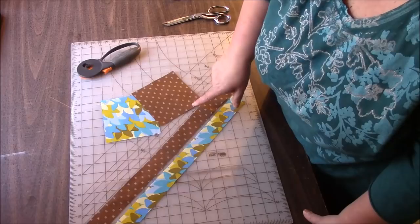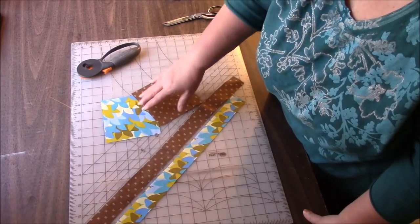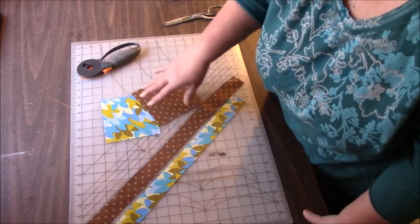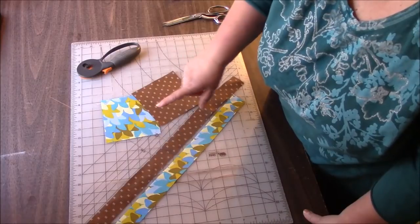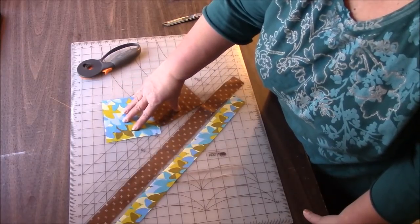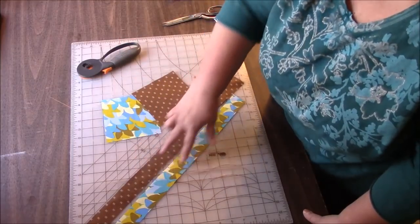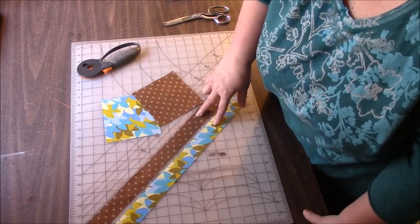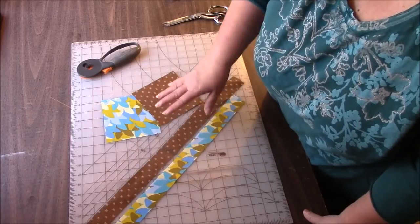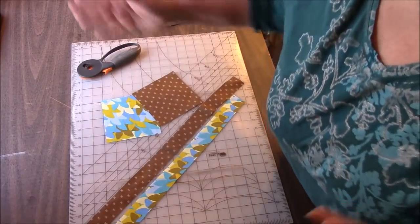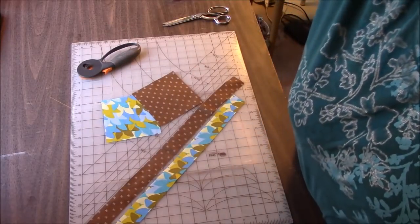If you wanted to do this project with a charm pack, obviously you're not going to have strips that match. So you could use your charm pack, make that all scrappy, all different prints, and then just pick two solids or something or two other prints that go with your charm pack and use that. It'll be a different look, but hey, it might be really super cool.